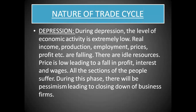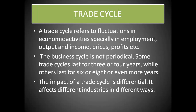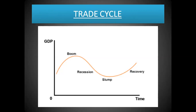Looking at the diagram: it goes upward during a boom period, then goes down showing recession. When we are at the lowest possible point, we call it slump or depression. After every depression, the economy starts to recover — the slope increases, moving upward towards the boom period. This cycle keeps repeating: after every recovery there will be a boom, after every boom there will be a recession, after every recession there will be a depression, and then again depression is followed by recovery, recovery by boom, and so on.